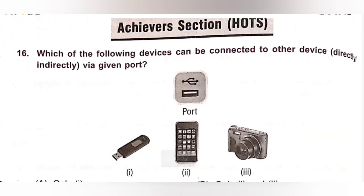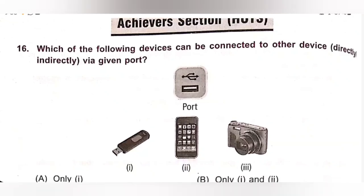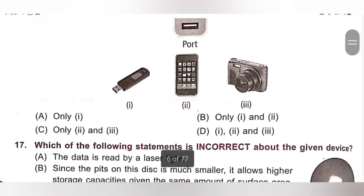Next, Achievers section. 16th. Which of the following devices can be connected to other devices directly or indirectly via the given port? A. Only 1. B. Only 1 and 2. C. Only 2 and 3. D. All of these, that is 1, 2 and 3.